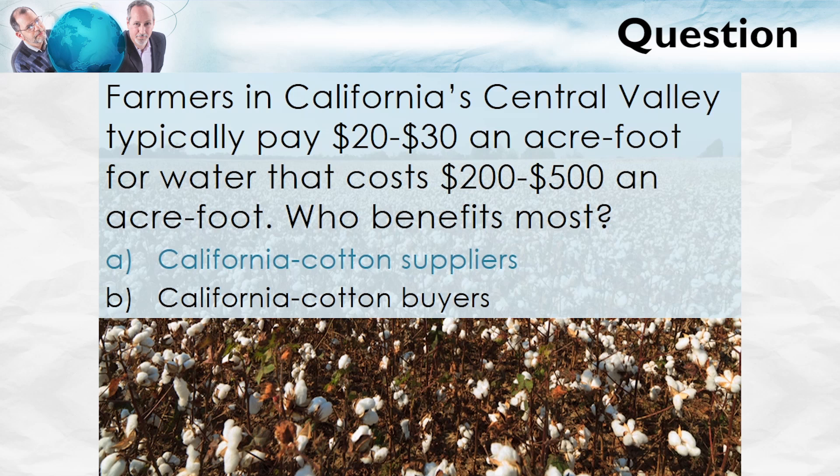Subsidies can often be wasteful, and one reason we have them is politics — the power of special interest groups and lobbying. However, subsidies can also be useful, particularly if there's a reason why the demand for a good understates its true value. We'll give lots of examples when we come to talk about externalities. In the next lecture, we'll look at wage subsidies for unskilled or lower-skilled workers and compare that with a minimum wage.